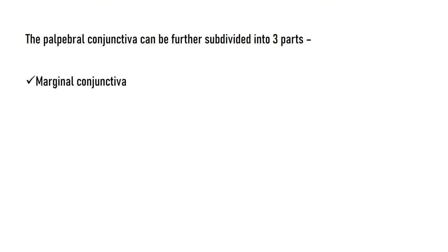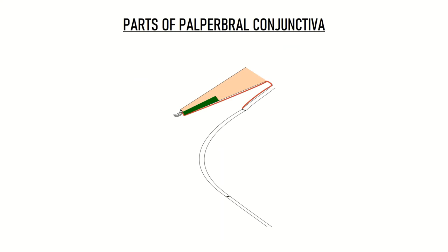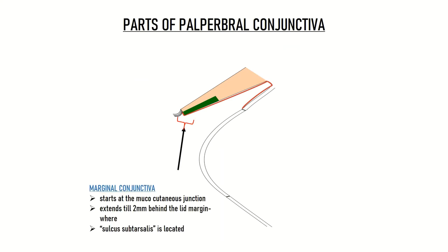The palpebral conjunctiva can be further subdivided into three parts: the marginal conjunctiva, the tarsal conjunctiva, and the orbital conjunctiva. Marginal conjunctiva starts at the mucocutaneous junction and extends till 2 mm behind the lid margin, where the sulcus subtarsalis, or the subtarsal groove, is located. Though this groove is hardly 1 mm deep, it is important because this is where many foreign bodies get lodged.